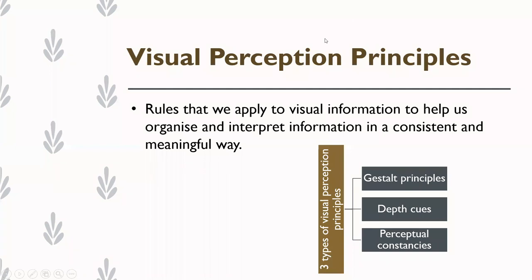Visual perception principles — the more formal definition would be: rules that we apply to visual information that help us to make sense and organize that visual information in a meaningful way.